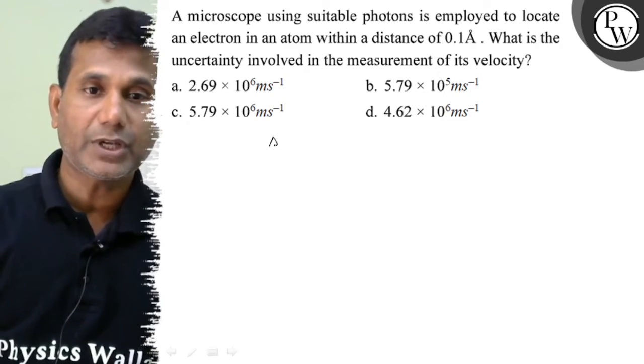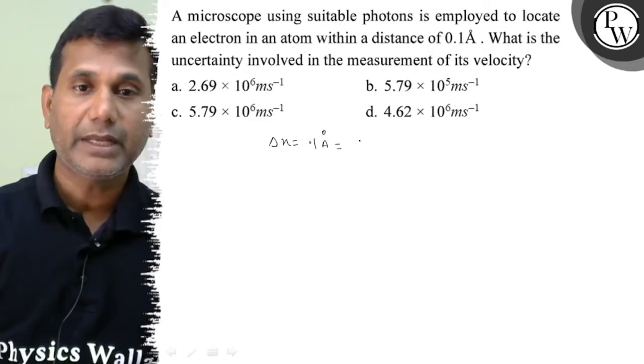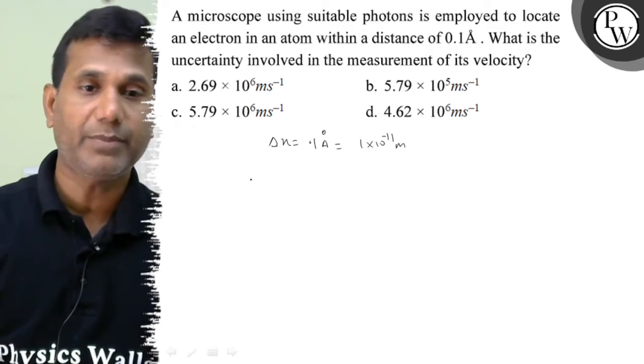The uncertainty in position, delta x, is given as 0.1 angstrom. That is 1 into 10 to the power minus 11 meter.